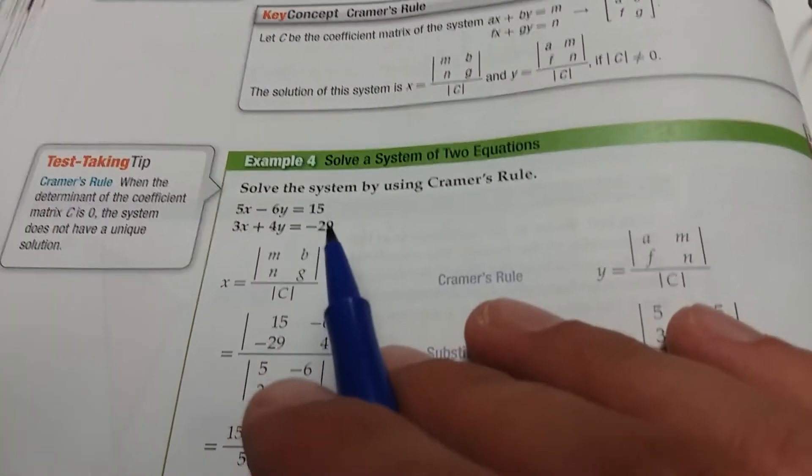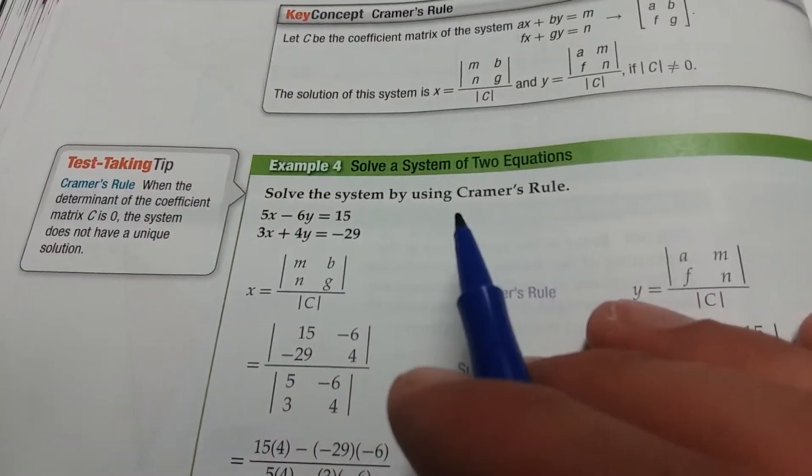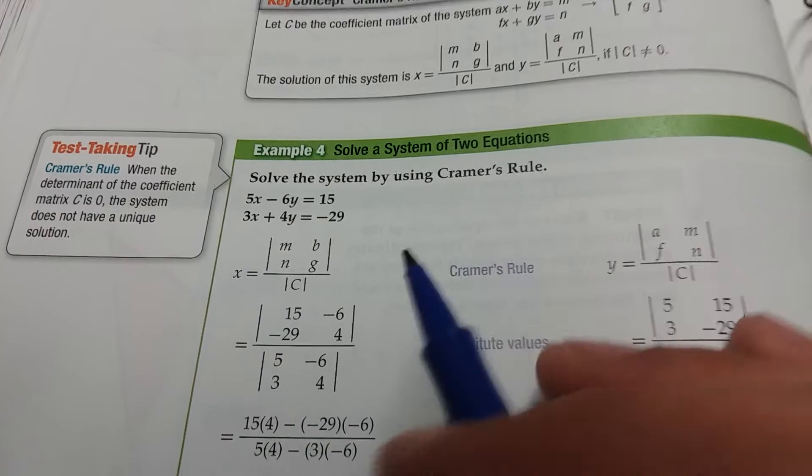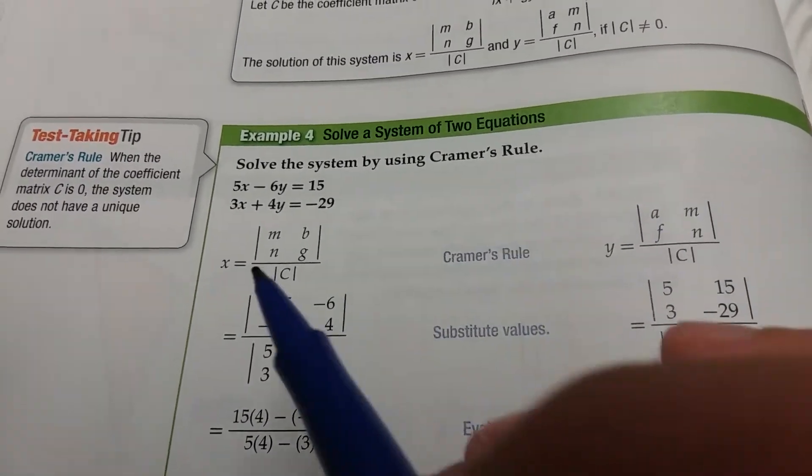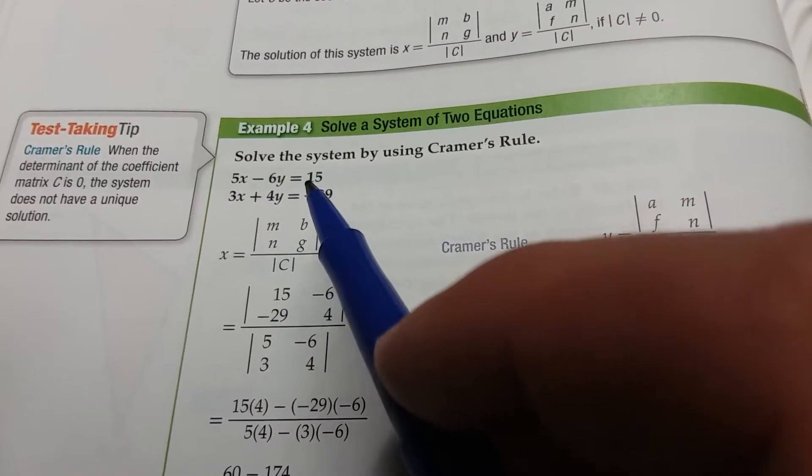So let's look at an example here. Solve the system by using Cramer's rule. So we're going to use determinants to find where these two lines would intersect.